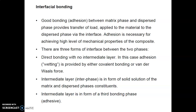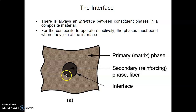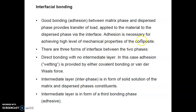Good bonding between the matrix phase and the dispersed phase provides transfer of load applied to the material to the dispersed phase via the interface. The addition of proper bonding is necessary for achieving a high level of mechanical properties of the composite. There are three forms of interface between two phases: direct bonding with no intermediate layer, where adhesion is provided by either covalent bonding or van der Waals forces; an intermediate layer in the form of a solid solution; and a third bonding form.